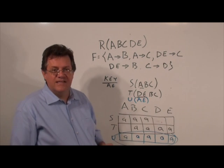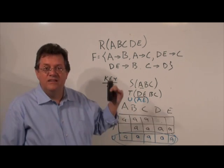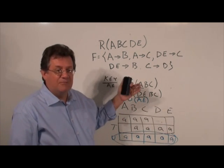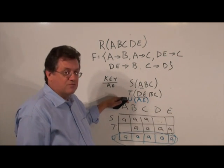And as you can see, we have a row of all distinguished variables, therefore this relation decomposition is now lossless because it now includes these three tables.